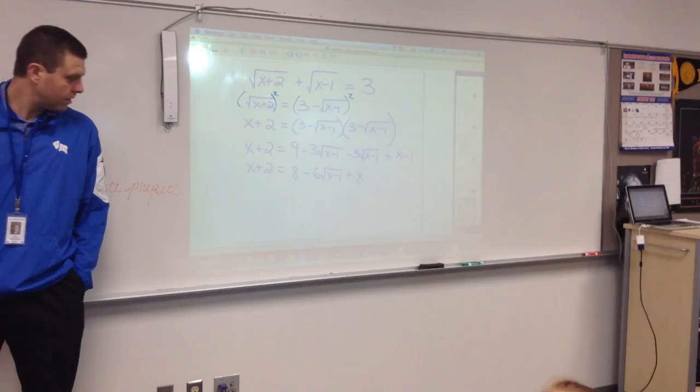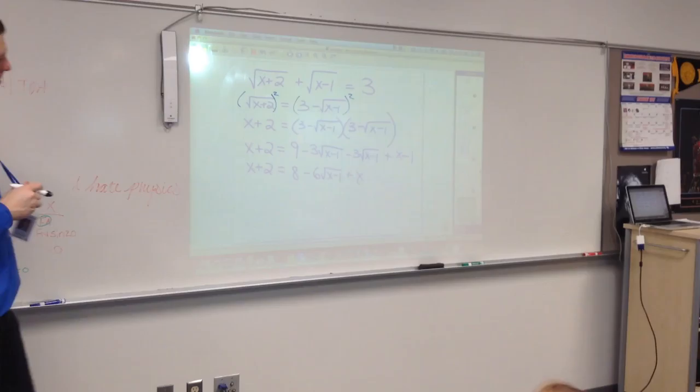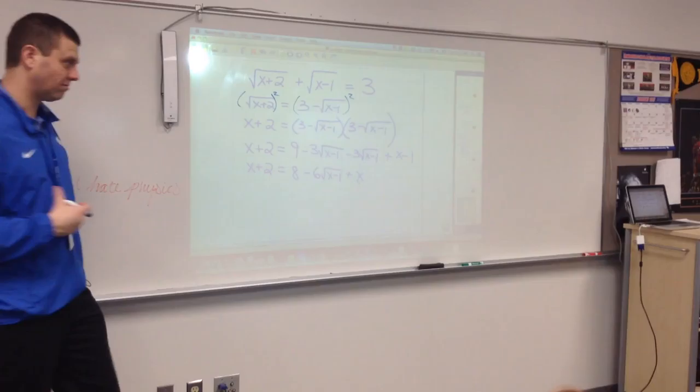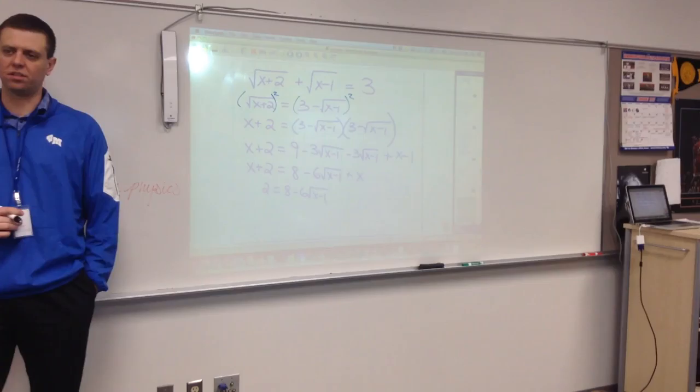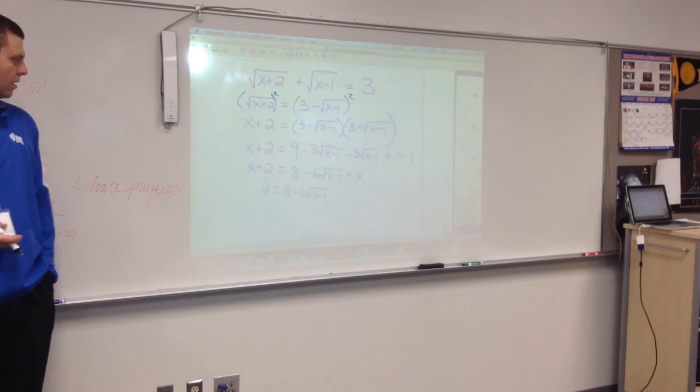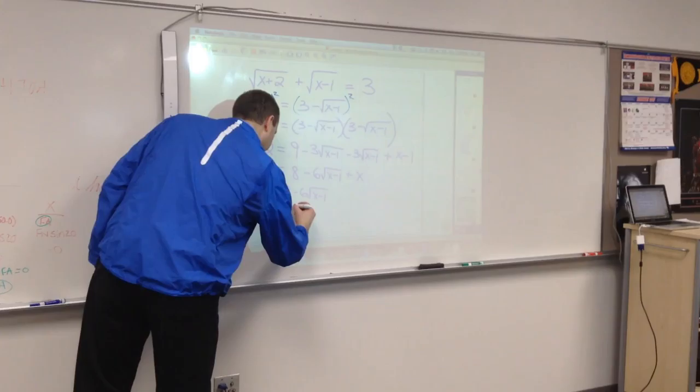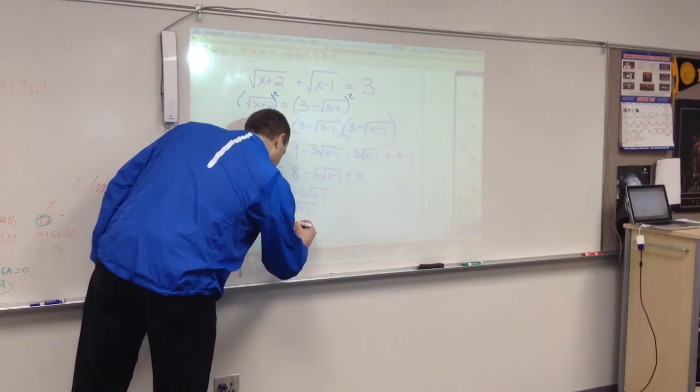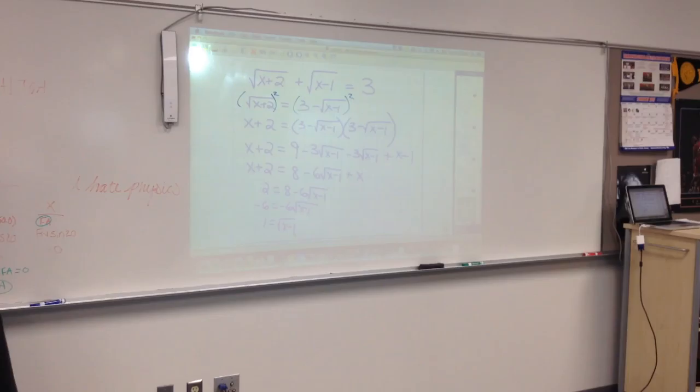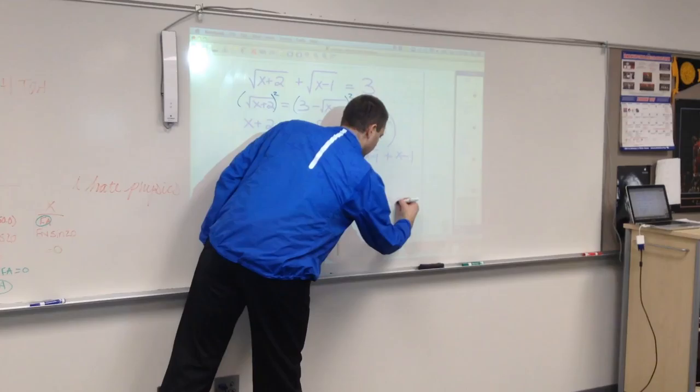That's not bad. Now, what do you think? Subtract x from both sides. Why is that nice? They're gone. So, if I subtract x from both sides now I have 2 equals 8 minus 6 square roots of x minus 1. Subtract the 8. So, negative 6 equals negative 6 square roots of x minus 1. Divide by negative 6. So, I get 1 equals the square root of x minus 1. Square both sides and I get 1 equals x minus 1. Add 1 to both sides and you get x equals 2.